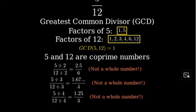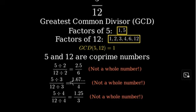Therefore, we can conclude that 5 twelfths is already in its simplest form, as there are no common factors other than one that divide both 5 and 12.